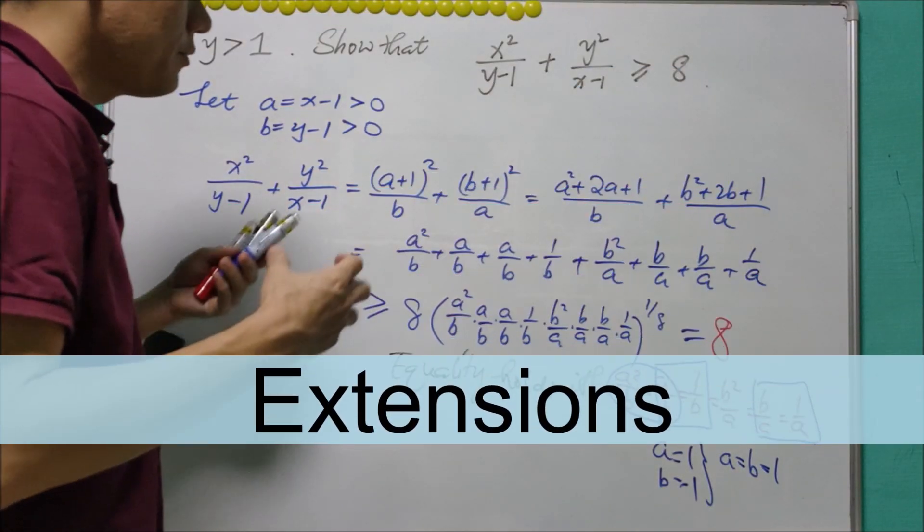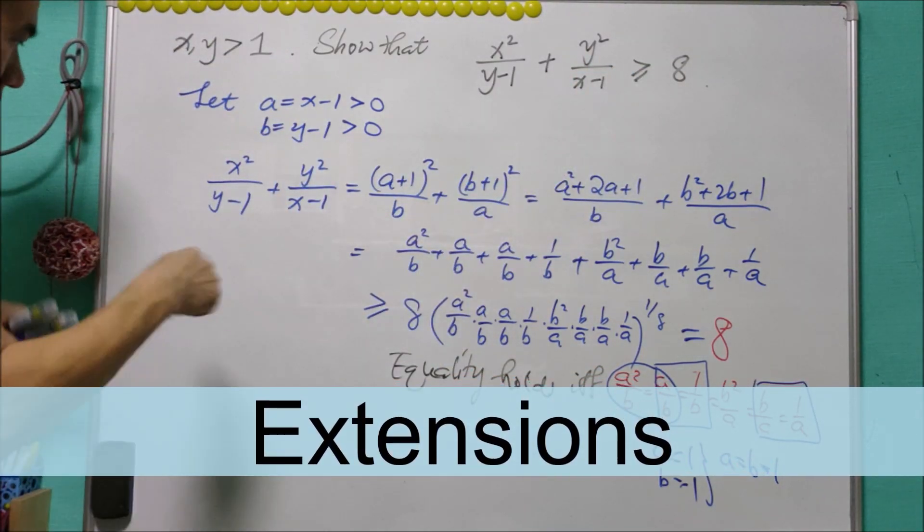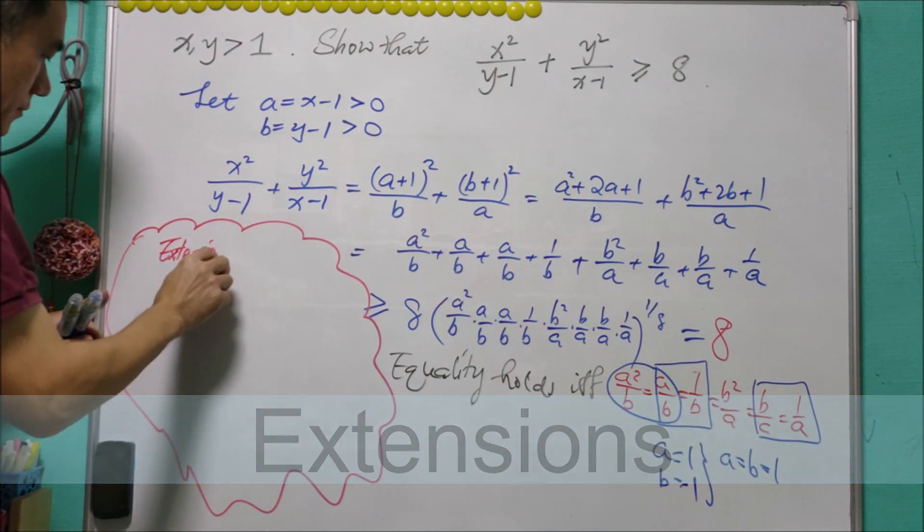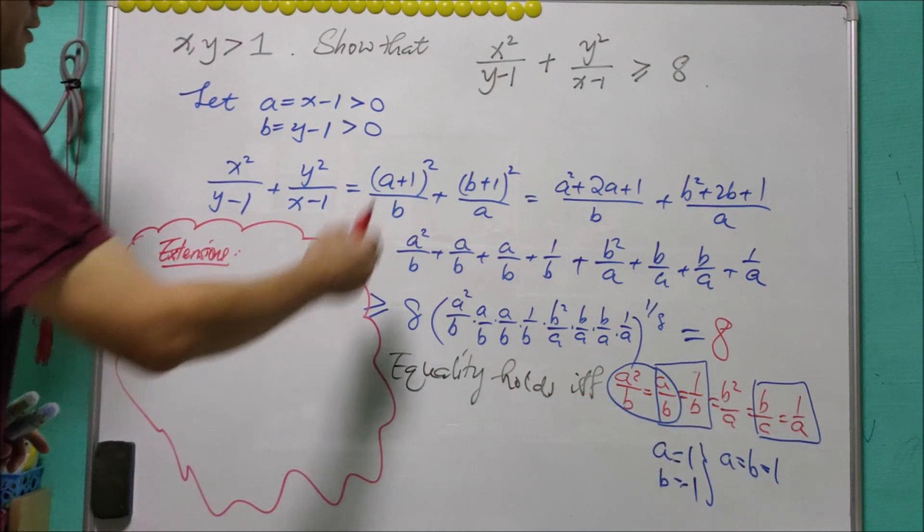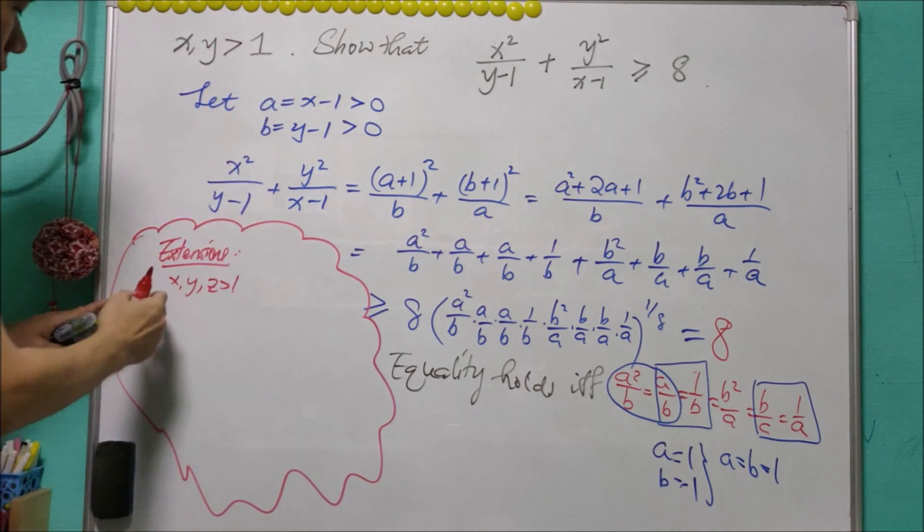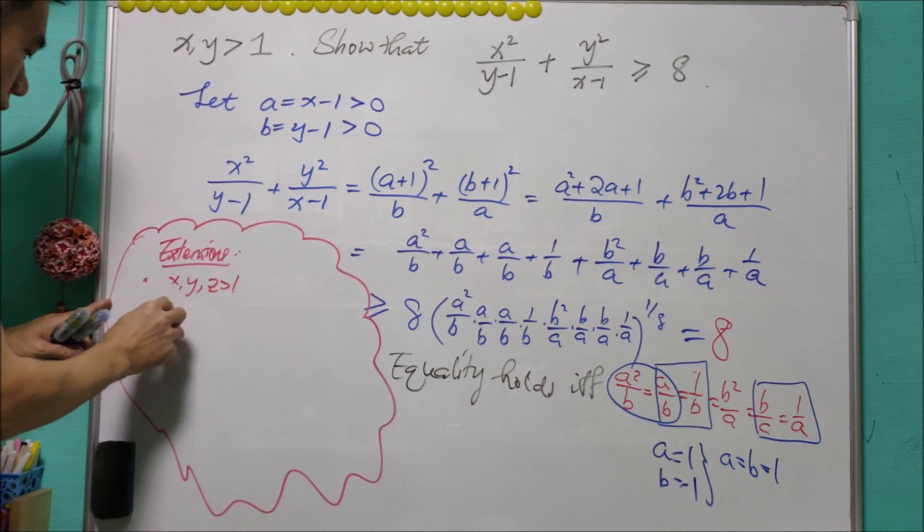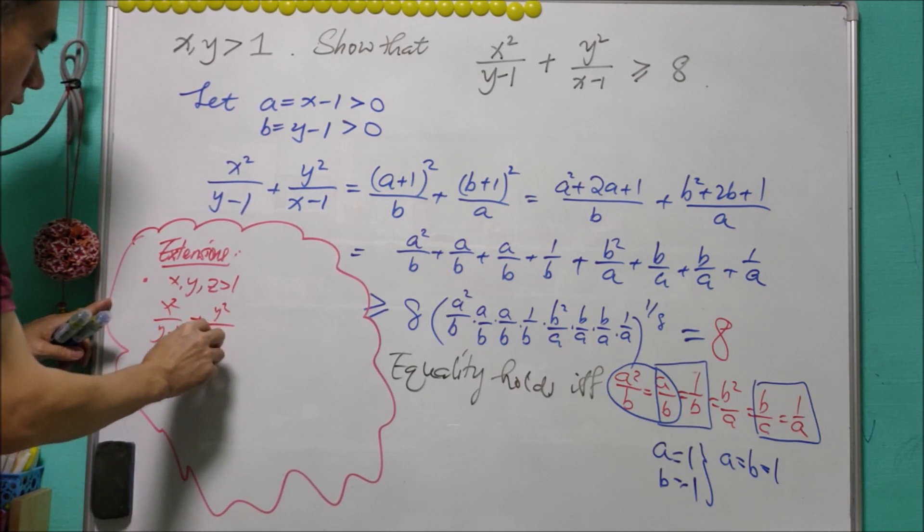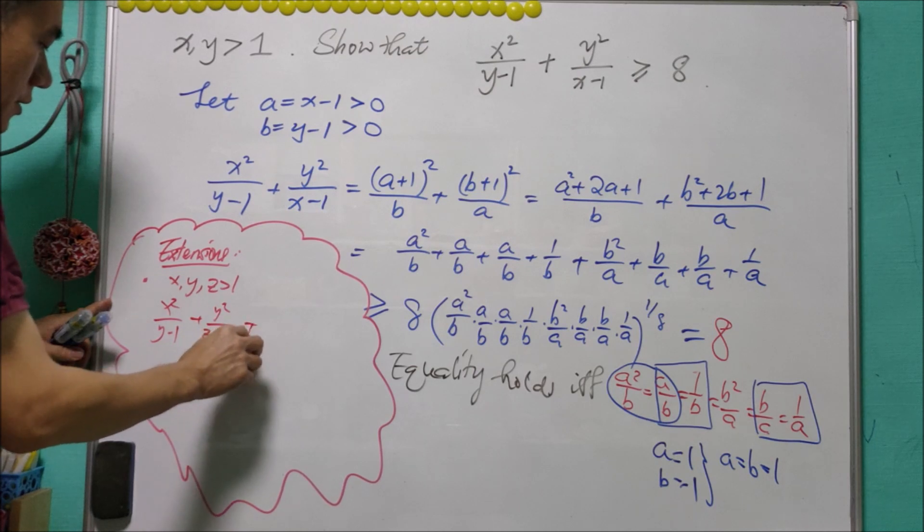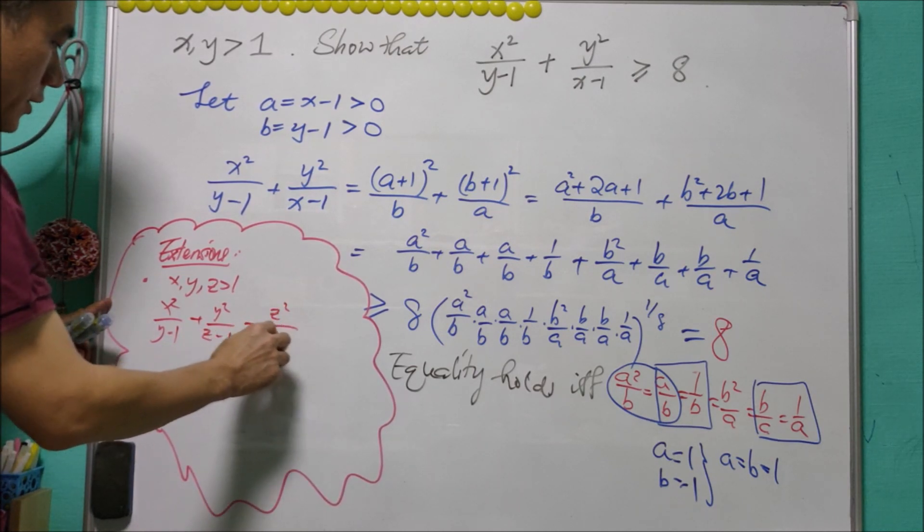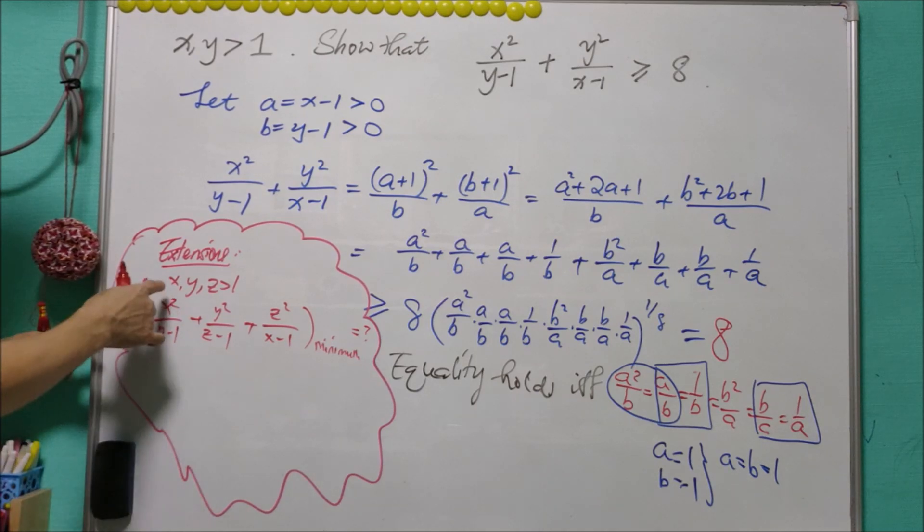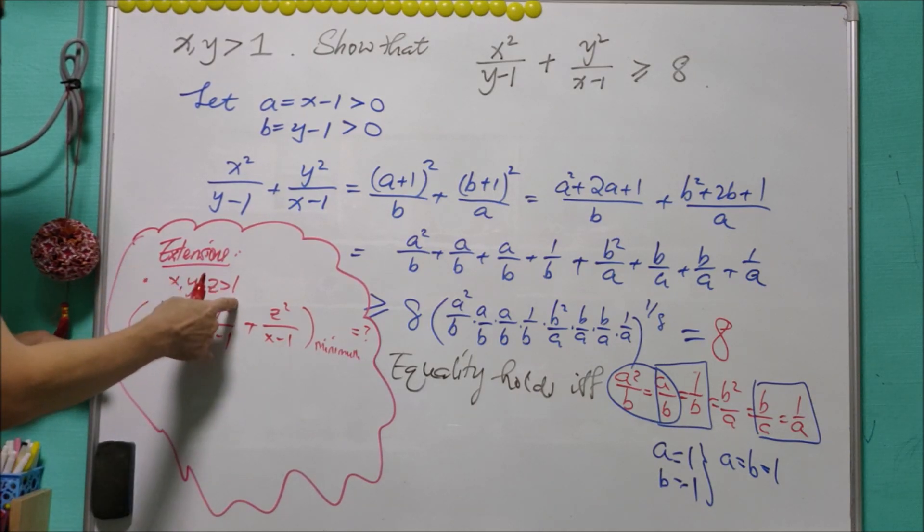We can make a little bit of extension for this question. I will give two different kinds of extension. The first kind of extension is: instead of X and Y, we have X, Y, Z greater than one: X²/(Y-1) + Y²/(Z-1) + Z²/(X-1). You may go and find what is the minimum value. Of course, you can have X, Y, Z, W, U, V, and so forth and do the similar thing.